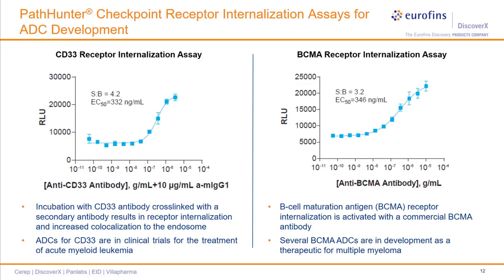This slide shows two internalization assays developed for immune checkpoint receptors. The CD33 internalization receptor assay shown on the left was tested with a commercial antibody to CD33. CD33 antibody was pre-incubated with a secondary antibody to cluster the CD33 receptor and then added to cells to monitor internalization, resulting in greater complementation at higher cross-linked antibody concentrations. A number of ADCs have already been developed for CD33 and some are currently in clinical trials for the treatment of acute myeloid leukemia. On the right, B-cell maturation antigen or BCMA receptor internalization was activated with a commercial BCMA antibody, with several BCMA ADCs in development as therapeutics for multiple myeloma.